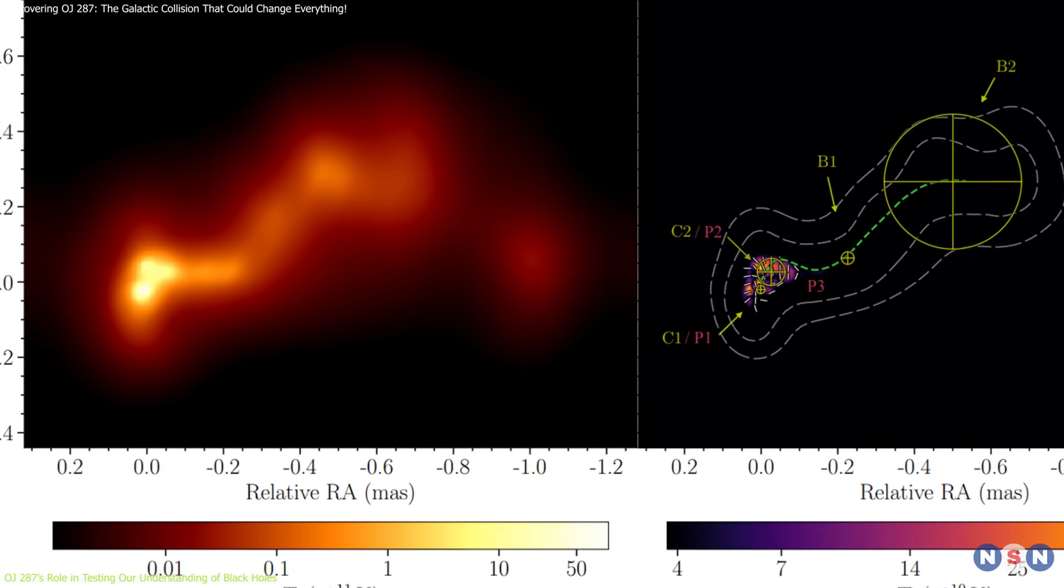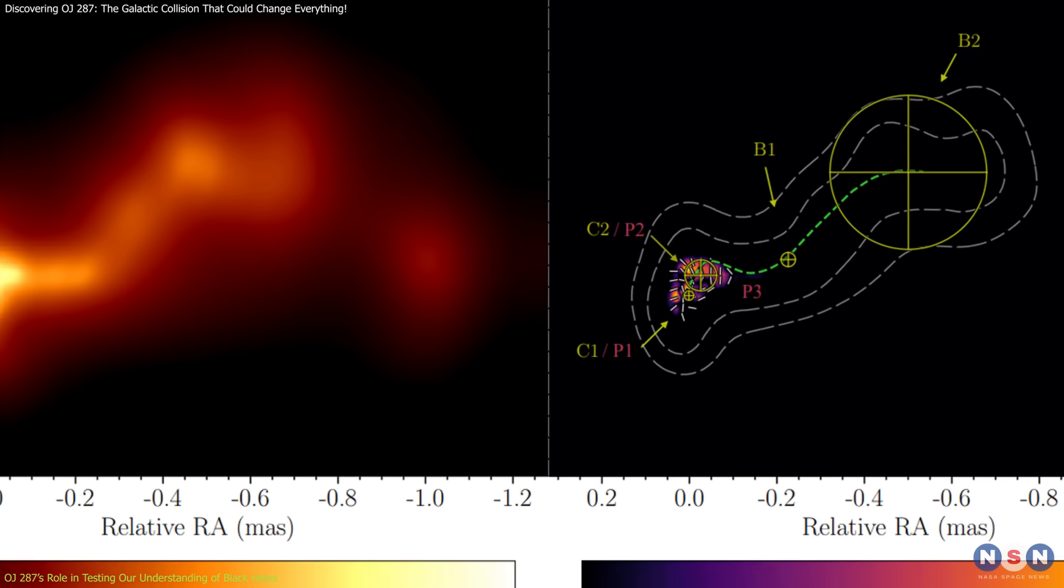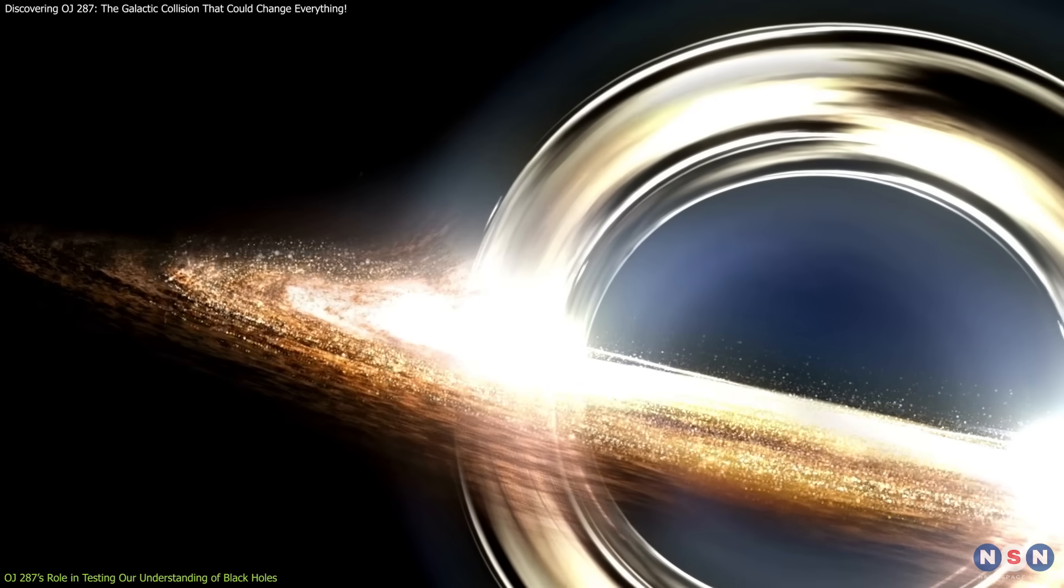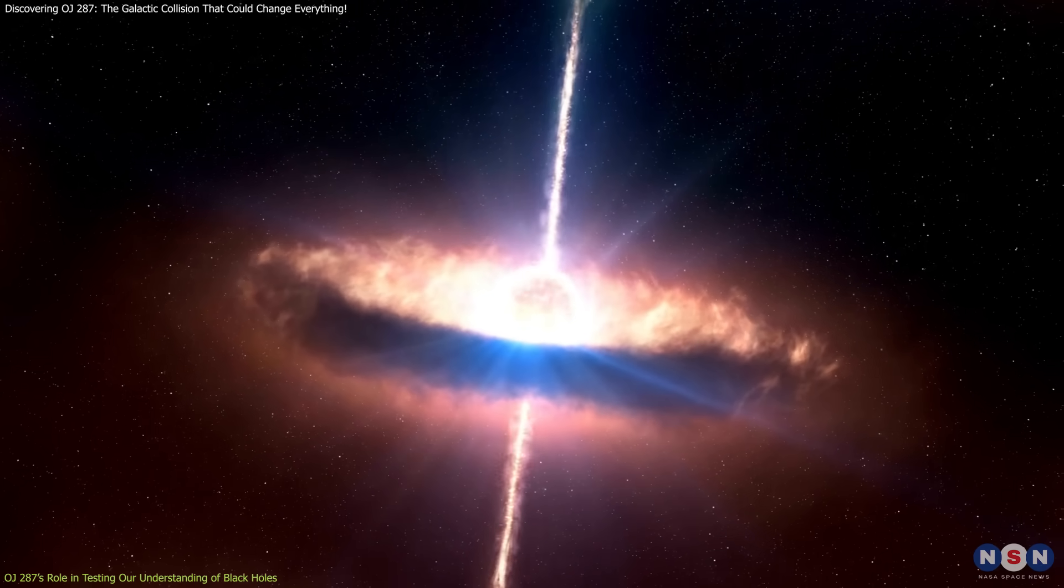Furthermore, the behavior of the crooked jet in OJ 287 offers new insights into the physics of accretion disks, jets, and the extreme environments around black holes.